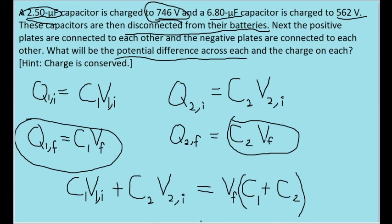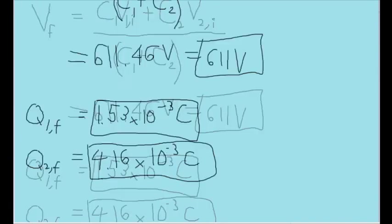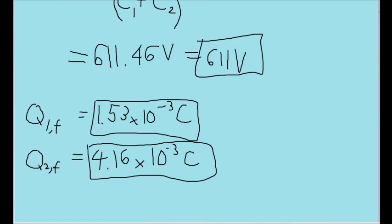So just take these formulas, plug in the capacitances that the problem gave us, and now we can use our newly found potential difference for the VF variable. If you plug these into your calculator properly, you should find a charge on capacitor 1 of about 1.53 times 10 to the negative 3 coulombs, and a charge on capacitor 2 of about 4.16 times 10 to the negative 3 coulombs.